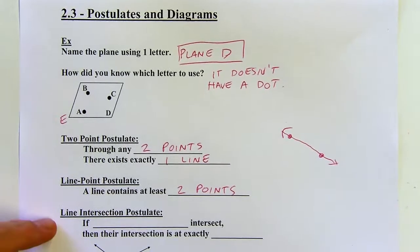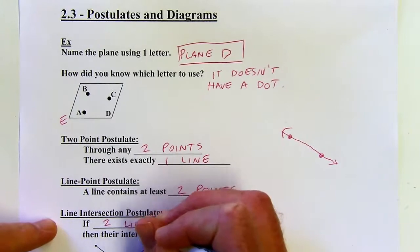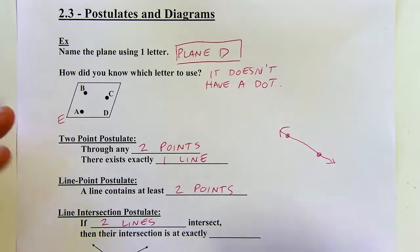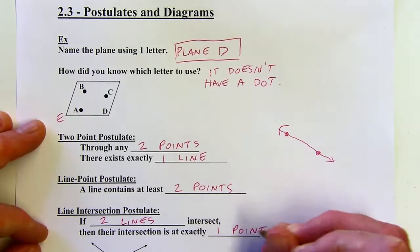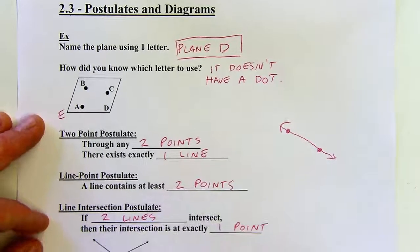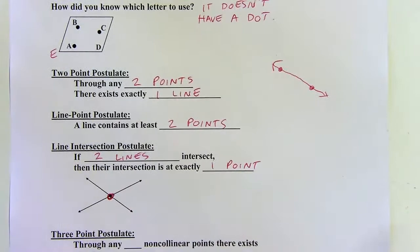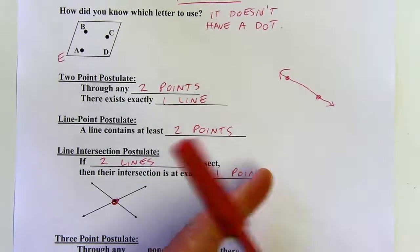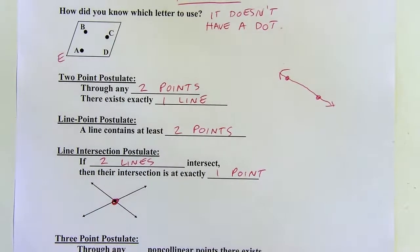The line-intersection postulate says that if two lines intersect, they're going to intersect at exactly one point. Of course, lines don't have to intersect — they could be parallel, skew, or on different planes altogether. But when they do intersect, they're going to intersect at exactly one point.